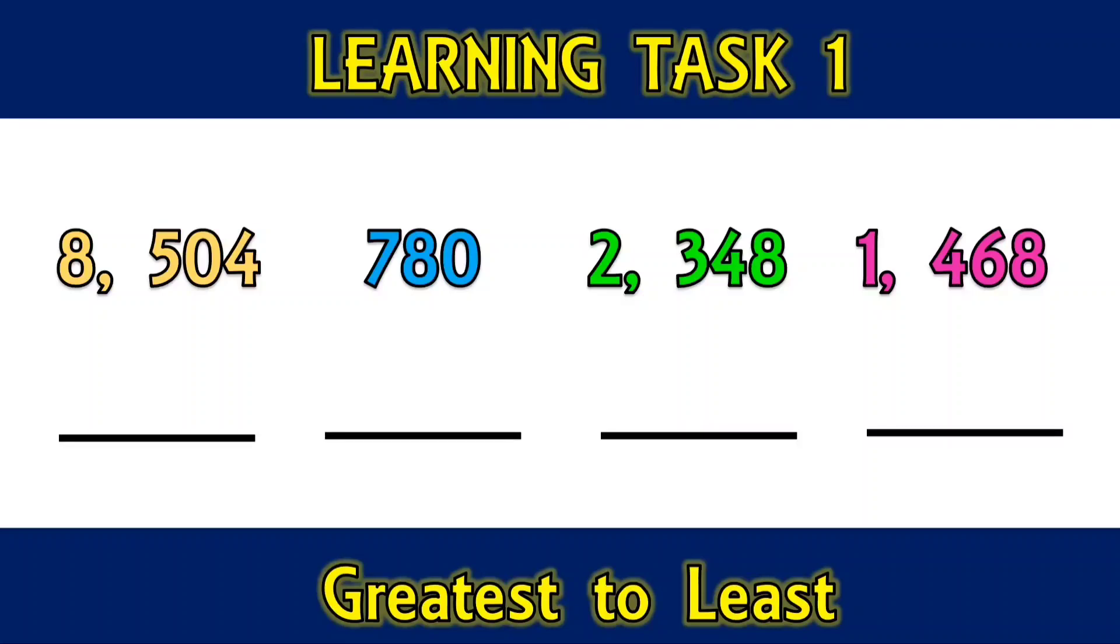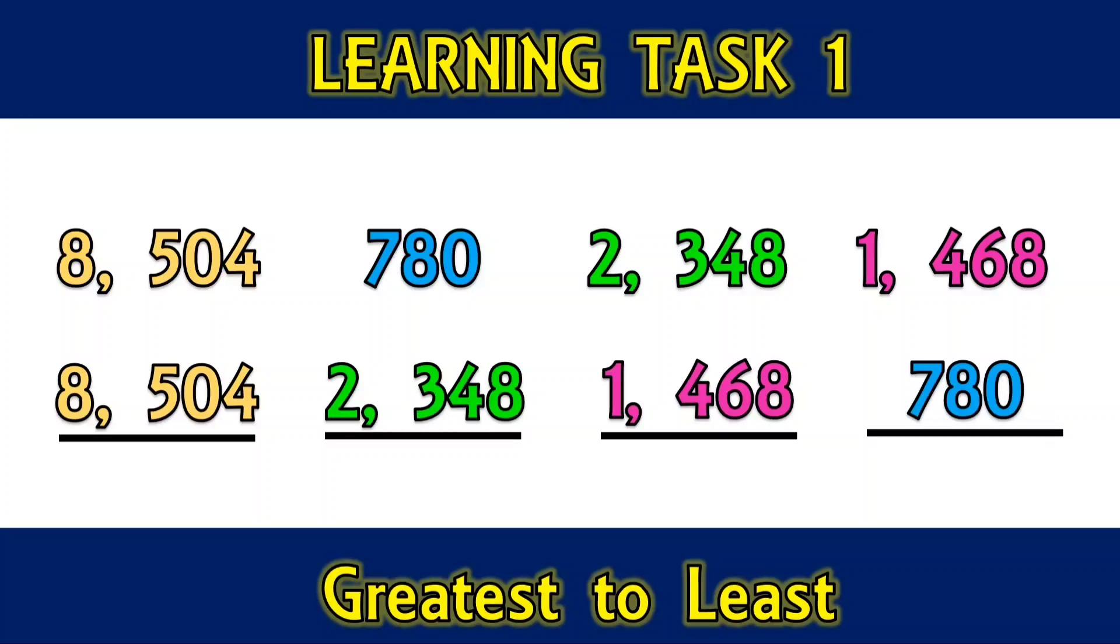Select the number which are not arranged in the required order. 8,504, 780, 2,348, and 1,468. Arrange this set of numbers from greatest to least. 8,504 is the greatest number and the least number is 780.